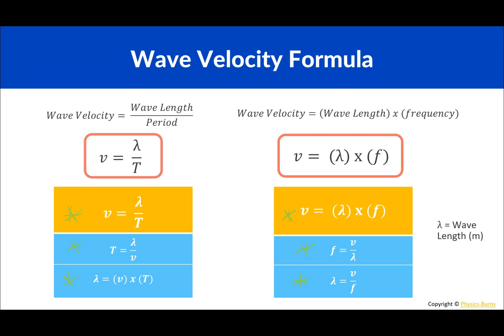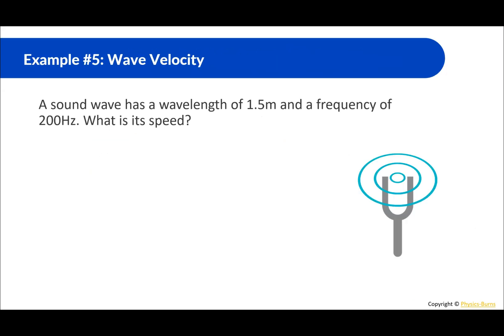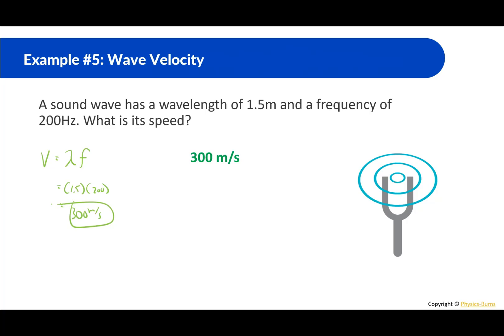A sound wave has a wavelength of 1.5 meters and a frequency of 200 hertz. What is the speed? We know velocity equals wavelength times frequency, so we plug in: 1.5 meters times 200 hertz equals 300 meters per second.